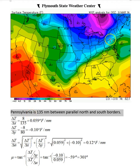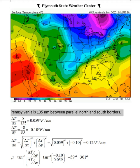Now we can do the y-direction. We pick two points here, one here and one about here to be on the gradients. We note that this is a little bit more than half the height of Pennsylvania — it's actually about 80 nautical miles. Also note that as y goes more positive, the temperature becomes more negative. Therefore, we have to use minus 8 over 80, and we get, for the gradient in the y-direction, minus 0.1 degrees Fahrenheit per nautical mile.